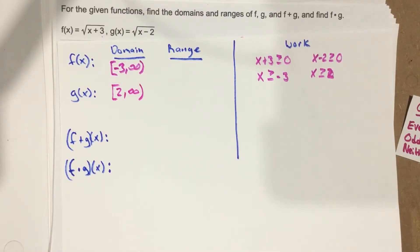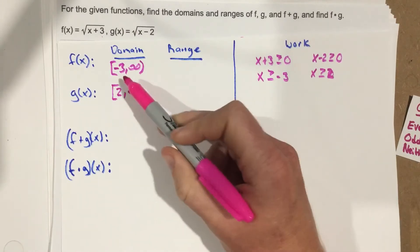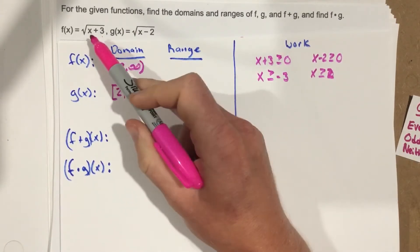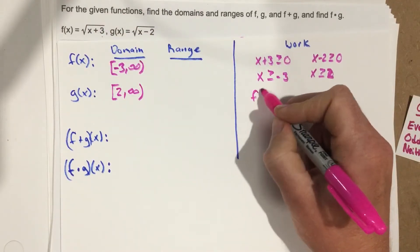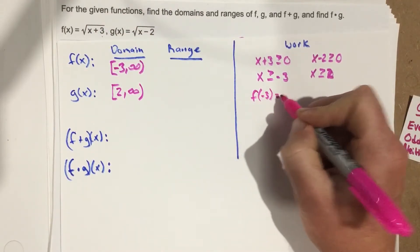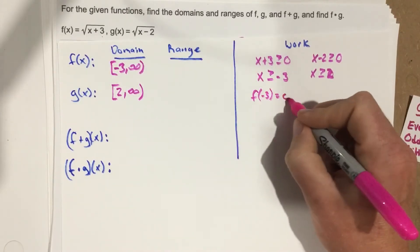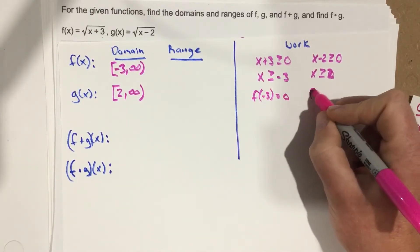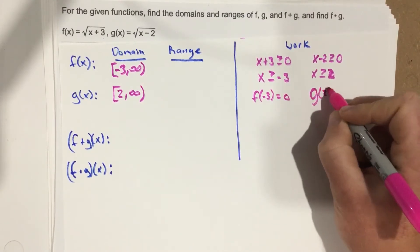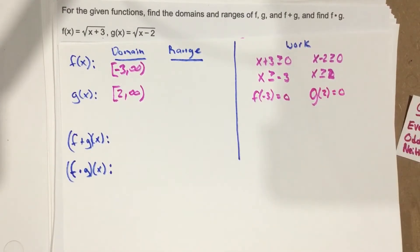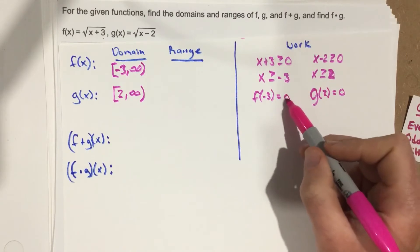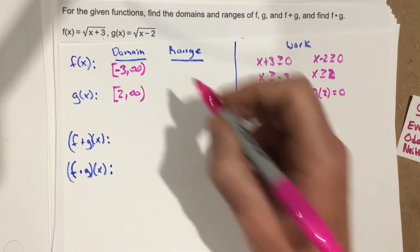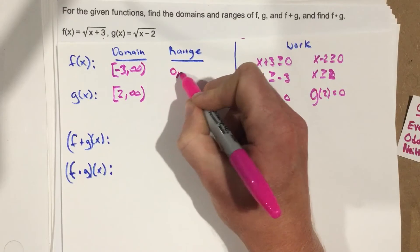What are the range values? If I plug negative 3 into f of x, I get 0. And when I plug in g of 2, I also get 0. Because any number I plug in after negative 3 or after 2 gives me a larger y value, the range for both of these goes from 0 to infinity.